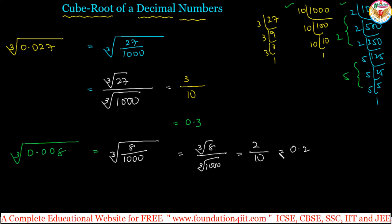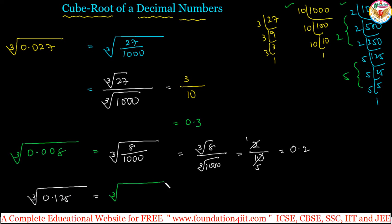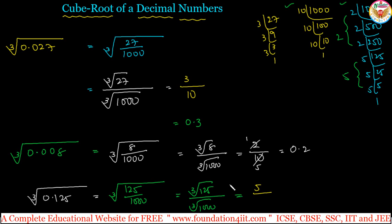The cube root of a decimal number should always be written as a decimal — do not simplify 2 by 10 to 1 by 5, because the answer must remain in decimal form: 0.2. Next example: cube root of 0.125. Convert to fraction: 0.125 is 125 by 1000. Cube root of 125 is 5, and cube root of 1000 is 10, so the answer is 5 by 10, which is 0.5.